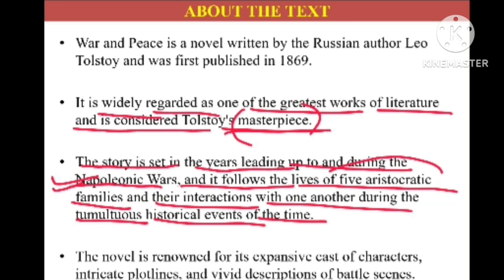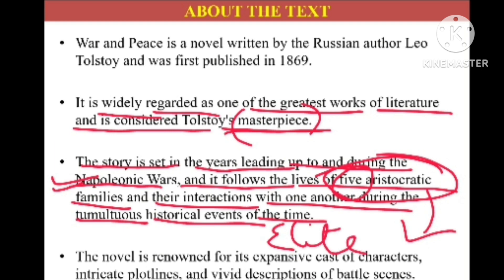There are five aristocratic families in the novel. Aristocratic families are elite, rich families whose motive was to enjoy life to the fullest — talking about food, fashion, love, and enjoyment. The novel shows how the war between Russia and France changed the entire system of Russia. Not only common people, but even Russian aristocratic people had been victims in this novel.